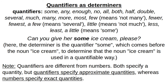We can also use quantifiers as determiners. Quantifiers include: some, any, enough, no, all, both, half, double, several, much, many, more, most, few, fewer, fewest, a few. There is a distinction: 'few' means not many, while 'a few' means several. Also: little, less, least, a little. 'Little' means not much; 'a little' means some.